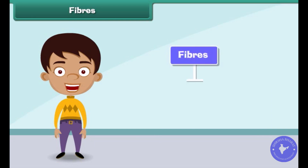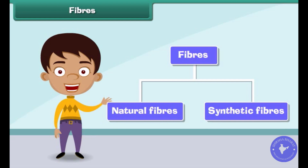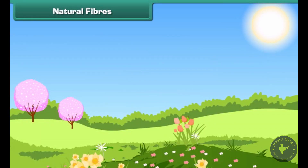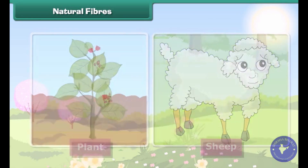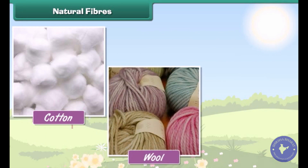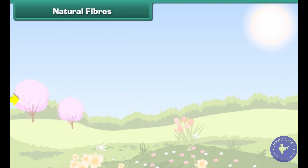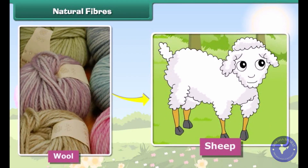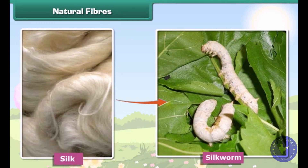Fibers are of two types: natural fibers and synthetic fibers. Natural fibers are made from plants and animals. Some natural fibers are cotton, wool and silk. Cotton is obtained from plants, wool is obtained from sheep, goats and camels, and silk is obtained from silk worms.